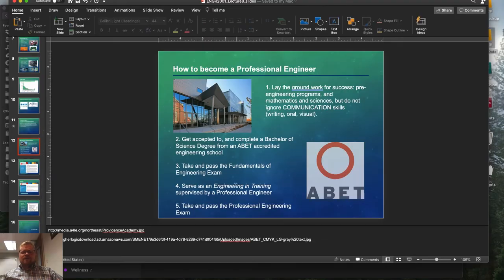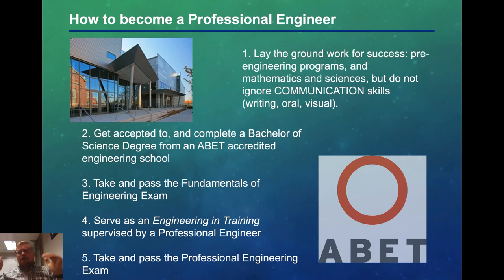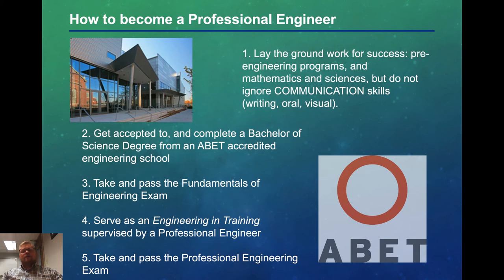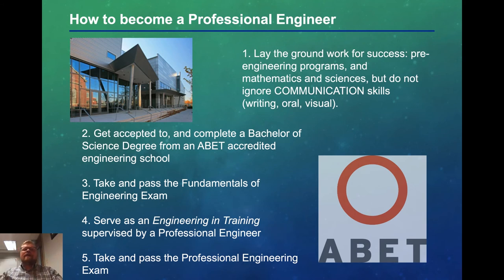So how do we become a professional engineer? First, there are pre-engineering programs in mathematics and sciences, but don't ignore communication skills — writing, oral, and visual communication. Second, get accepted to and complete a Bachelor of Science degree from an ABET accredited engineering school. Then you take and pass the Fundamentals of Engineering exam. You then serve as an engineer in training for a period of time supervised by a professional engineer — they check off on your designs while you are still technically an engineer, just not a registered licensed professional engineer. Then you take and pass a professional engineering exam.